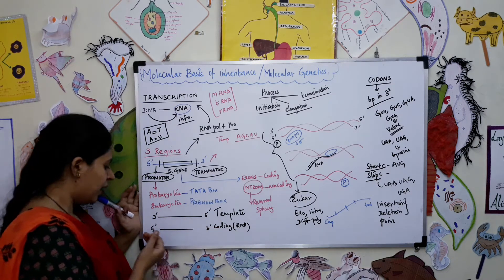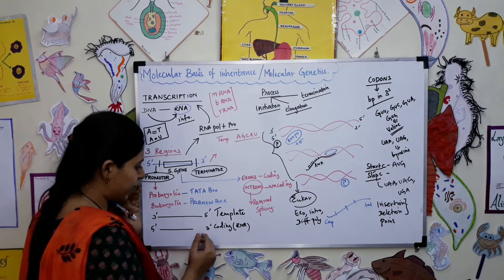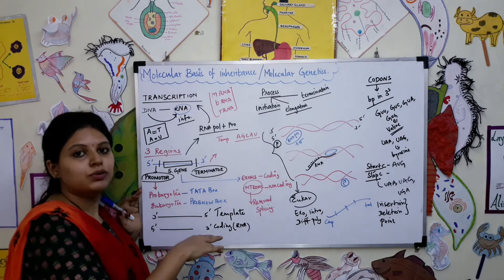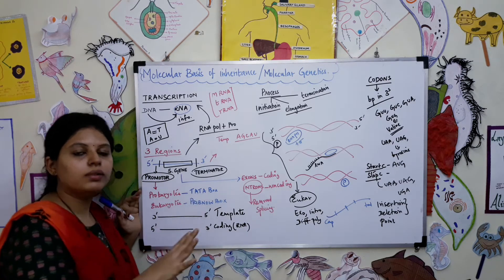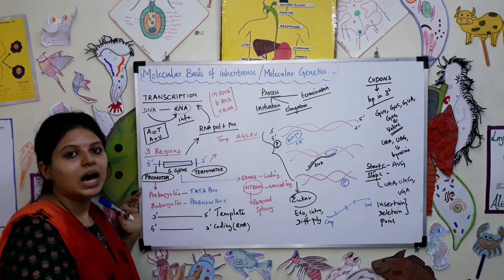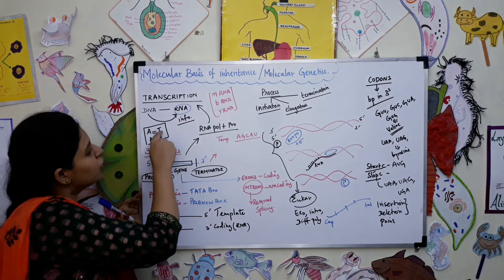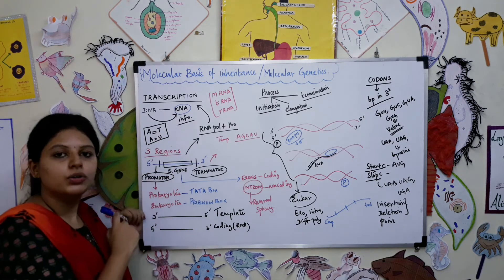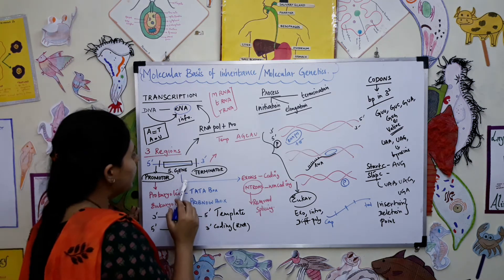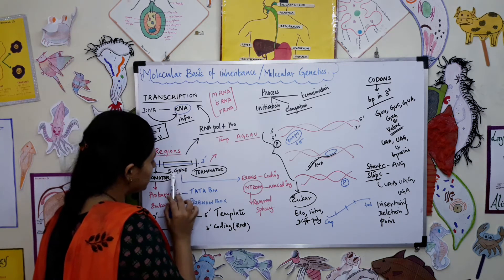Always the 3 prime to 5 prime direction will be the template strand, and 5 prime to 3 prime will be the coding strand. The coding strand will code all four base pairs in relation with RNA, where instead of thymine, uracil is used.